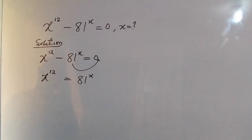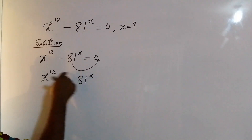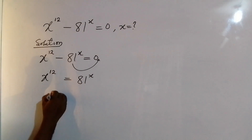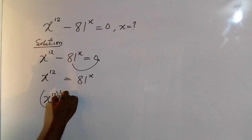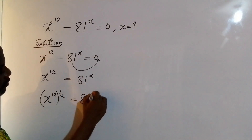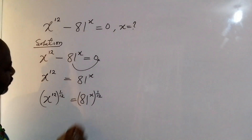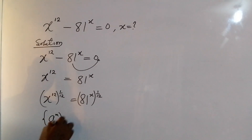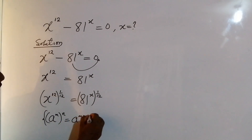Now on the left, I want to eliminate the power of 12. To do that, I simply multiply the powers on both sides by 1 over 12 — that is the reciprocal of 12. So I have x to the power of 12, with the power multiplied by 1 over 12, equal to 81 to the power of x, with the same power multiplied by 1 over 12. I am going to apply the law that if I have a to the power of m, all to the power of n, this is the same as a to the power of m times n.